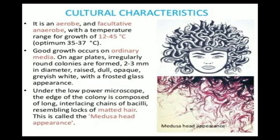Regarding cultural characteristics: Bacillus anthracis is an aerobe and facultative anaerobe, with a temperature range for growth of 12 to 45 degrees Celsius. Aerobe means it needs oxygen for growth. Facultative anaerobe means it can grow both in the presence and in the absence of oxygen. Growth occurs within the temperature range of 12 to 45 degrees Celsius.